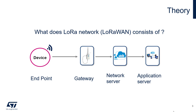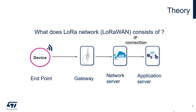And the highest layer is the application server. The application server is the application seen by the end customer — by a utility company, for example. At the device level we have LoRa physical layer, LoRa modulation. Between gateway and network server we have an IP connection, such as 3G, Wi-Fi, optical fiber, or whatever. The same applies between network server and application server — it can be physical or virtual servers, depending on IT experts.